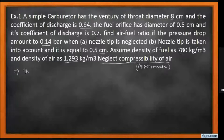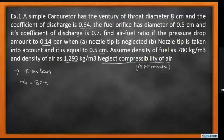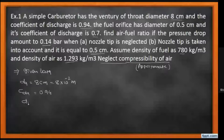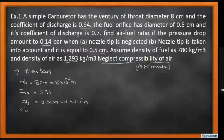Writing the given data: the throat diameter d_a is 8 centimeters, which is 8×10⁻² meters. The coefficient of discharge for the throat is 0.94. The diameter of the fuel orifice d_f is 0.5 centimeters, which is 0.5×10⁻² meters. The coefficient of discharge for the fuel orifice is 0.7.